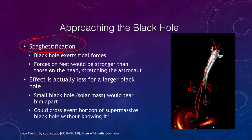The forces on the feet are stronger than the forces on the head, which causes this stretching. Interestingly, this effect is actually less for a larger black hole. A smaller black hole — say something with the mass of the Sun or 10 to 20 times the mass of the Sun — would tear our astronaut apart. However, you could cross the event horizon of a supermassive black hole millions of times the mass of our Sun without even knowing it.